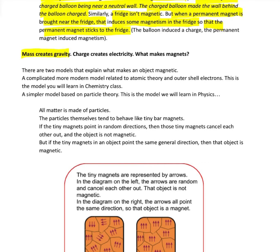So here's where we're at. We know that mass creates gravity. We know charge creates electricity. But we don't have a good idea of what makes a magnet. Well, maybe you do. Here's what we're going to roll with though. There are two models for magnetism. There's a nice complicated model that fits chemistry theory, outer shell electrons, and things like that. That's the model that you're going to learn in chemistry class. There's a simpler model that works for us. For as far as we're going with magnetism, we don't need the complicated model. So we're going to use a simple model that's based on particle theory.